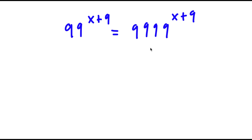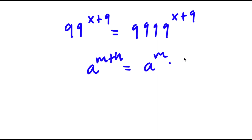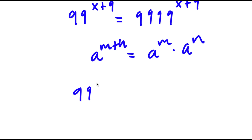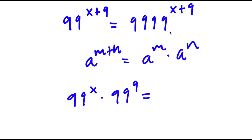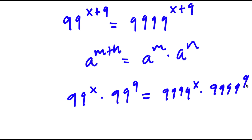To solve this, I'm going to first start by using the property of exponents that says a to the power of m plus n is equal to a to the power of m times a to the power of n. By using this property, 99 to the power of x plus 9 equals 99 to the power of x times 99 to the power of 9. And 9,999 to the power of x plus 9 equals 9,999 to the power of x times 9,999 to the power of 9.